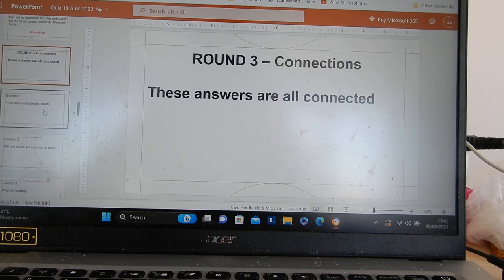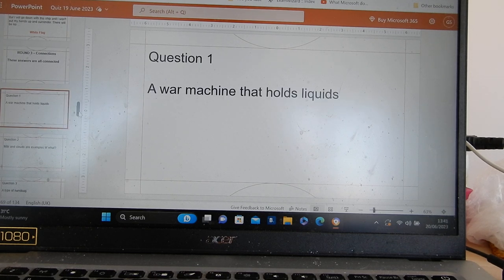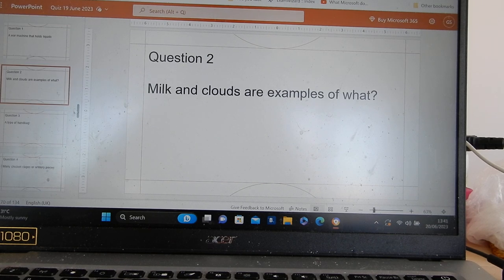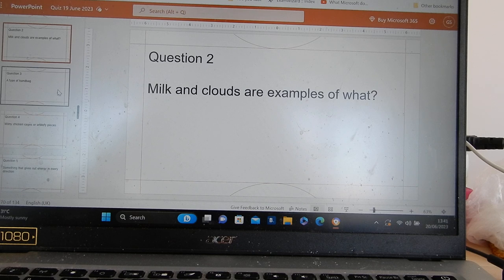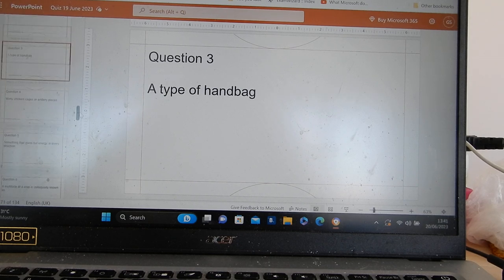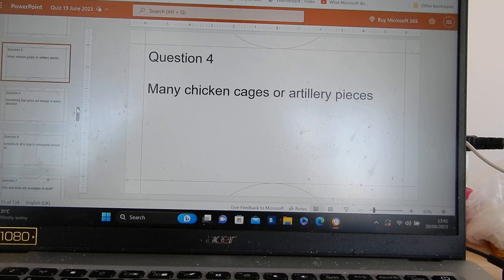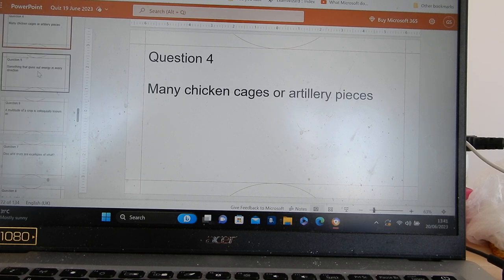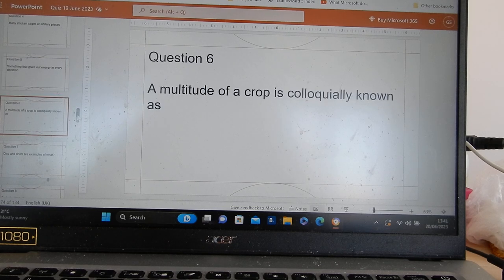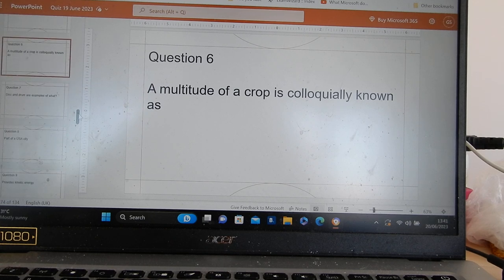Round three. All the questions are, all the answers are connected. Question one. A war machine that holds liquids. Question two. Milk and clouds are examples of what? Part of a USA City. A type of handbag. Many chicken cages or artillery pieces. Something that gives out energy in every direction. A multitude of a crop that is colloquially known as...